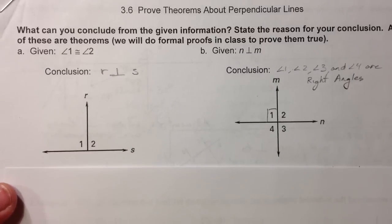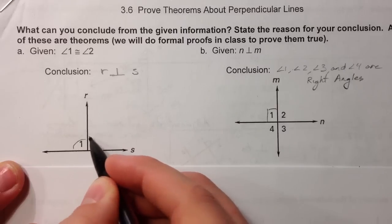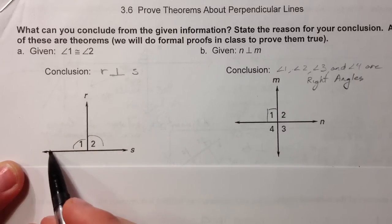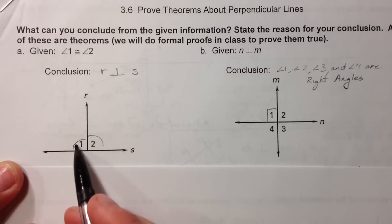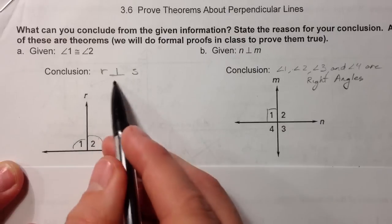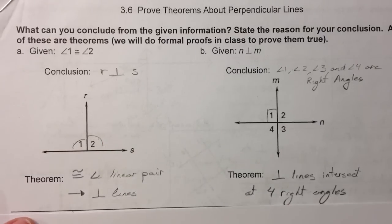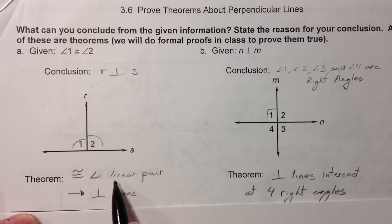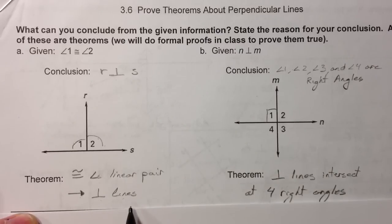In this first theorem, if we know that angle 1 is congruent to angle 2, and we've got a linear pair because they make a line, then we know that both of these have to be 90 degrees, because they have to add up to 180 and be equal — so we know it's perpendicular. I call this the 'congruent angles linear pair tells me that I have perpendicular lines' theorem.